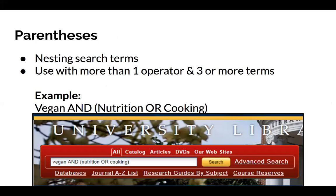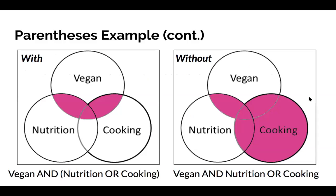For example, if you search for 'vegan AND (nutrition OR cooking)' with parentheses around the last two search terms, the catalog will return items about vegan nutrition, vegan cooking, and any resources about all three topics. If you remove the parentheses, the catalog will process operators in direct order — AND first, OR second — yielding resources about vegan nutrition and then any resource about cooking in general.